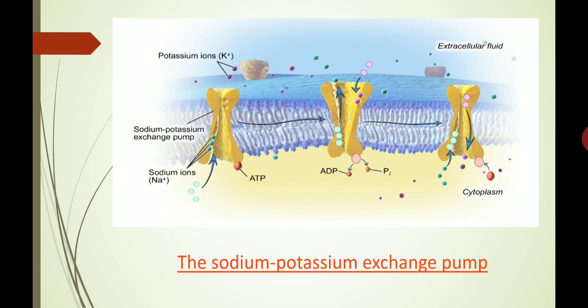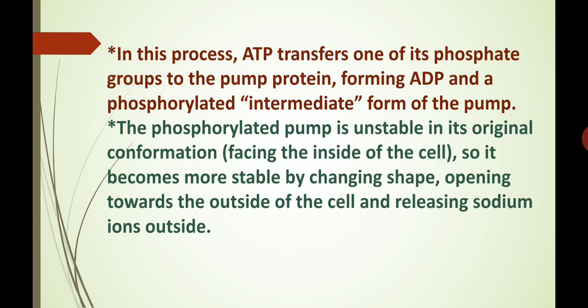Here in this diagram, the sodium-potassium exchange pump is shown. In this process, ATP transfers one of its phosphate groups to the pump protein, forming ADP and a phosphorylated intermediate form of the pump. The phosphorylated pump is unstable in its original conformation facing the inside of the cell, so it becomes more stable by changing shape, opening towards the outside of the cell and releasing sodium ions outside.